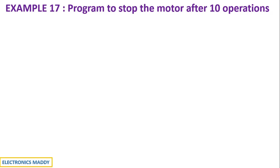In our previous video, we saw the concept of up counter, and now in this particular video I have taken this example because we will be able to understand how an up counter can be utilized in order to stop the motor after 10 operations. So basically, this is an illustration of an up counter, and that is why this program is taken into consideration.